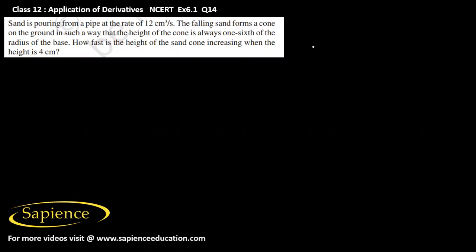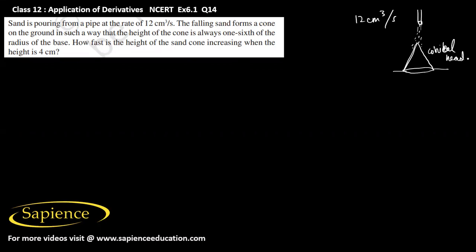Sand is pouring from a pipe at the rate of 12 cm³ per second. The falling sand forms a conical heap on the ground in such a way that the height of the cone is always one sixth of the radius of the base. So if the radius is r, then height h equals r by 6.